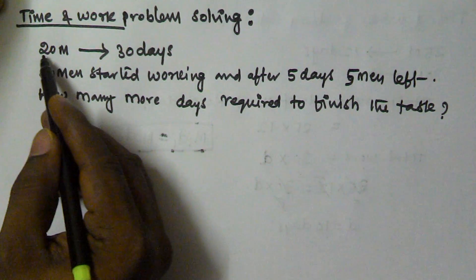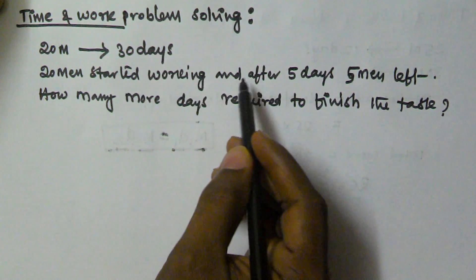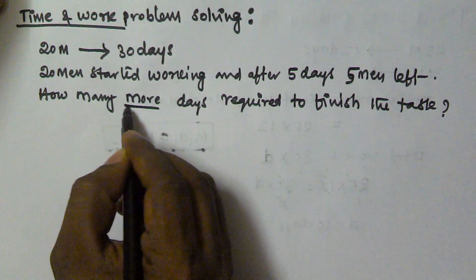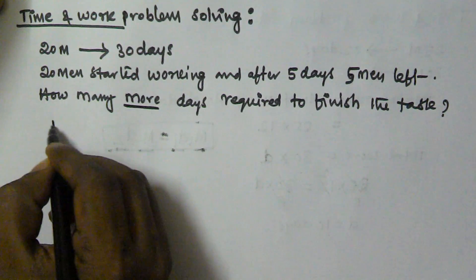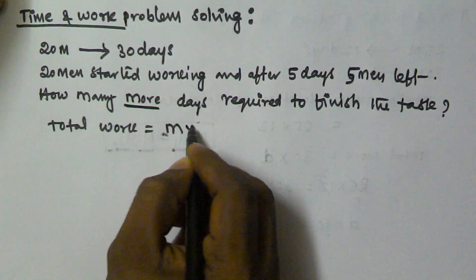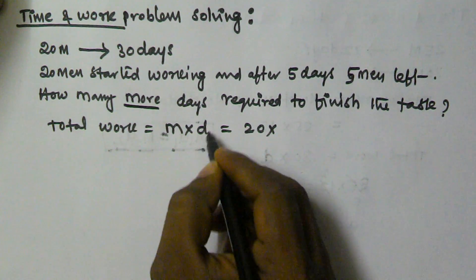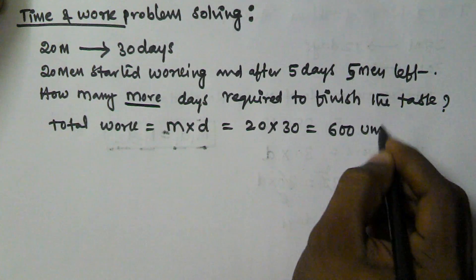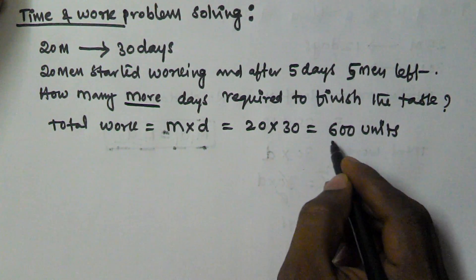So 20 men finished the work in 30 days. Total work is equal to m into d — total men is 20 and the number of days they worked is 30, so 20 into 30 is equal to 600 units. So that means total work is 600 units.